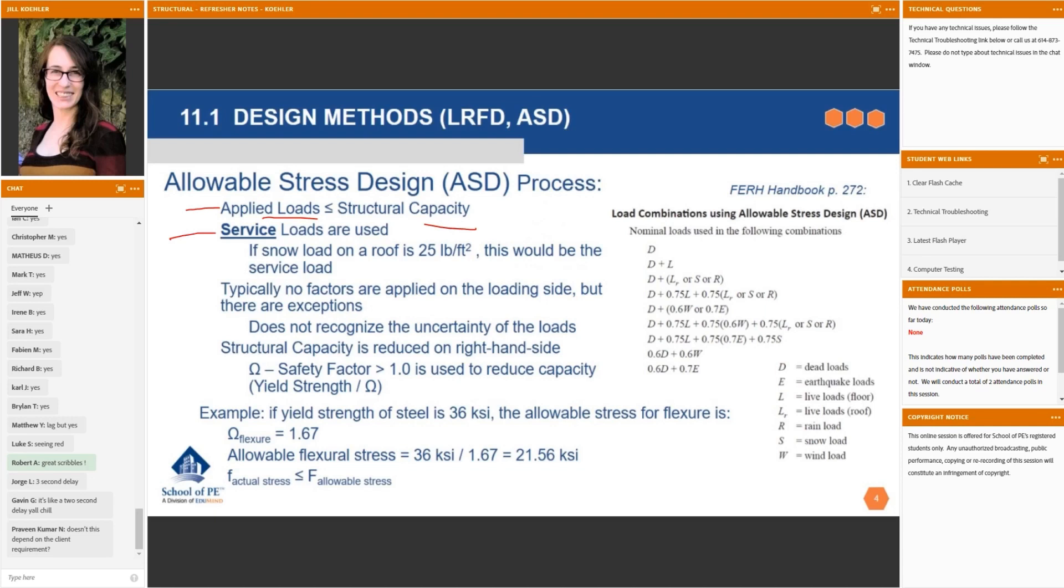So first of all, service loads are used. Service load means if the snow load on a roof is expected to be 25 pounds per square foot, this is the service load. So as you start, you say, what's expected? And this is often given in a problem or by the building code if you're in the real world. So you have the expected load, and that's what you use without modifying that on that side of the inequality. So typically, no factors are applied on the loading side, but there are exceptions.